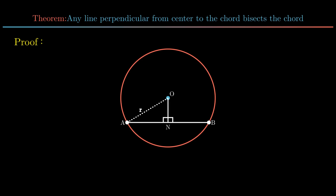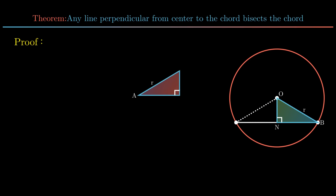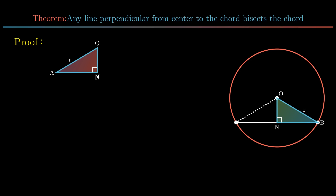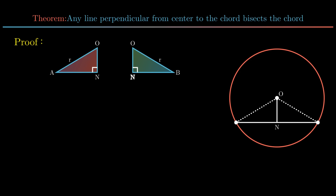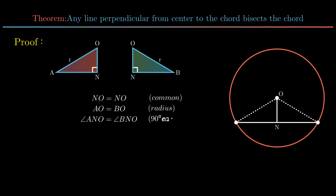Join OA and OB representing radii of the circle. Triangles ONA and ONB can be proved congruent: side NO is common to both triangles, side AO is equal to side BO as each is a radius, and angle ANO is equal to angle BNO, each 90 degrees.